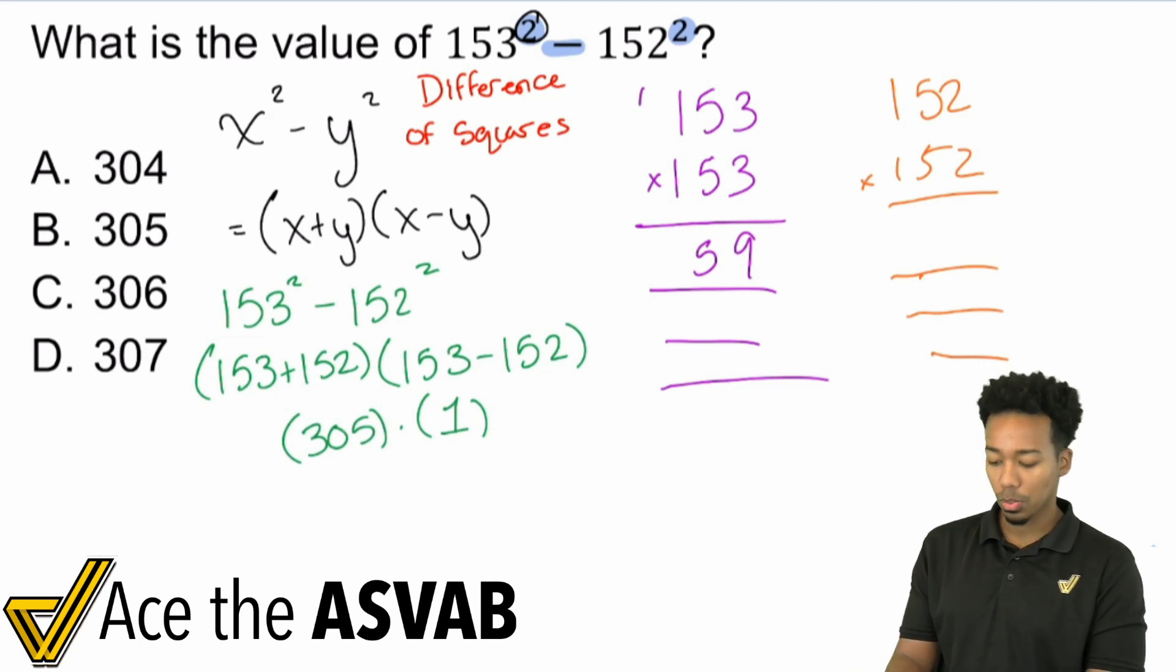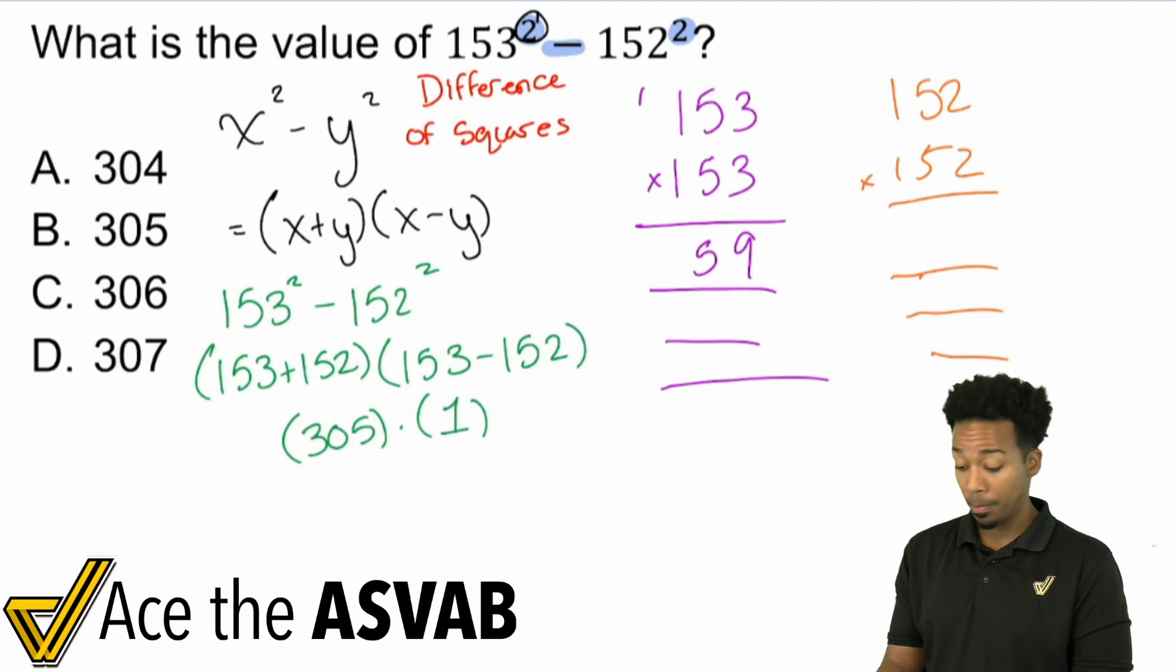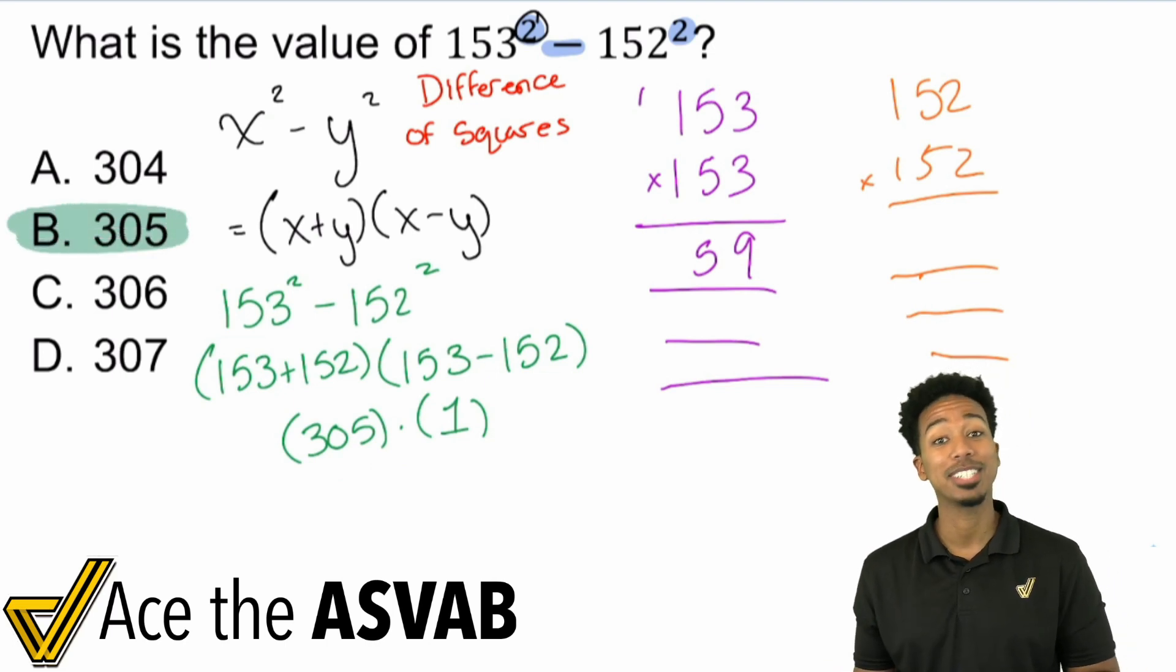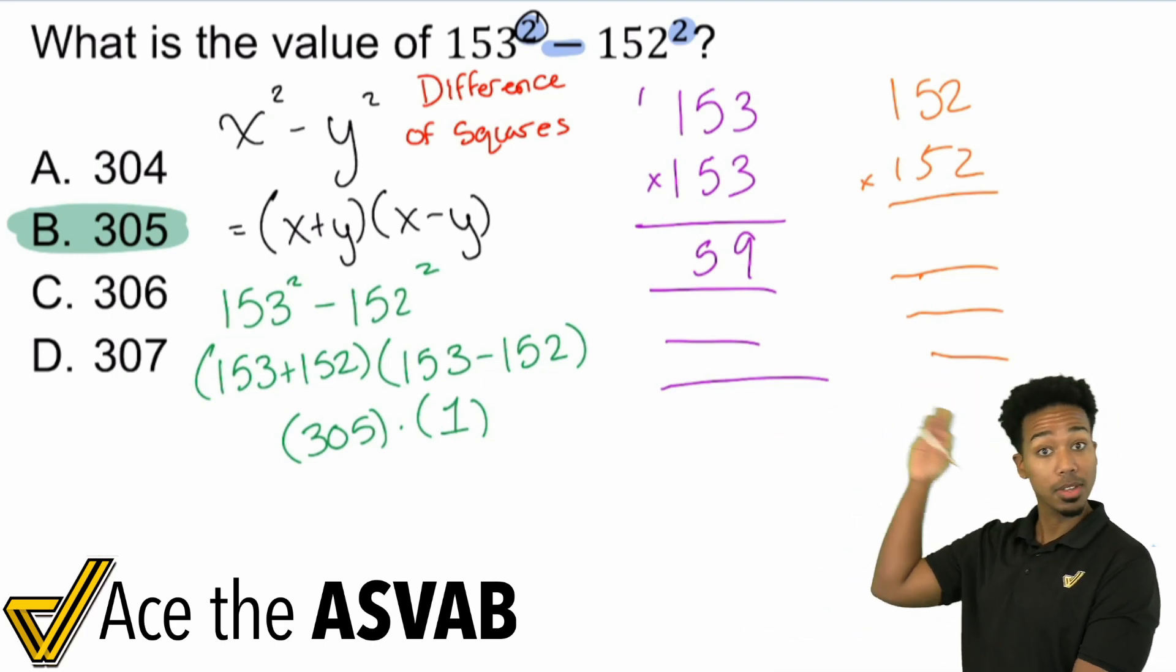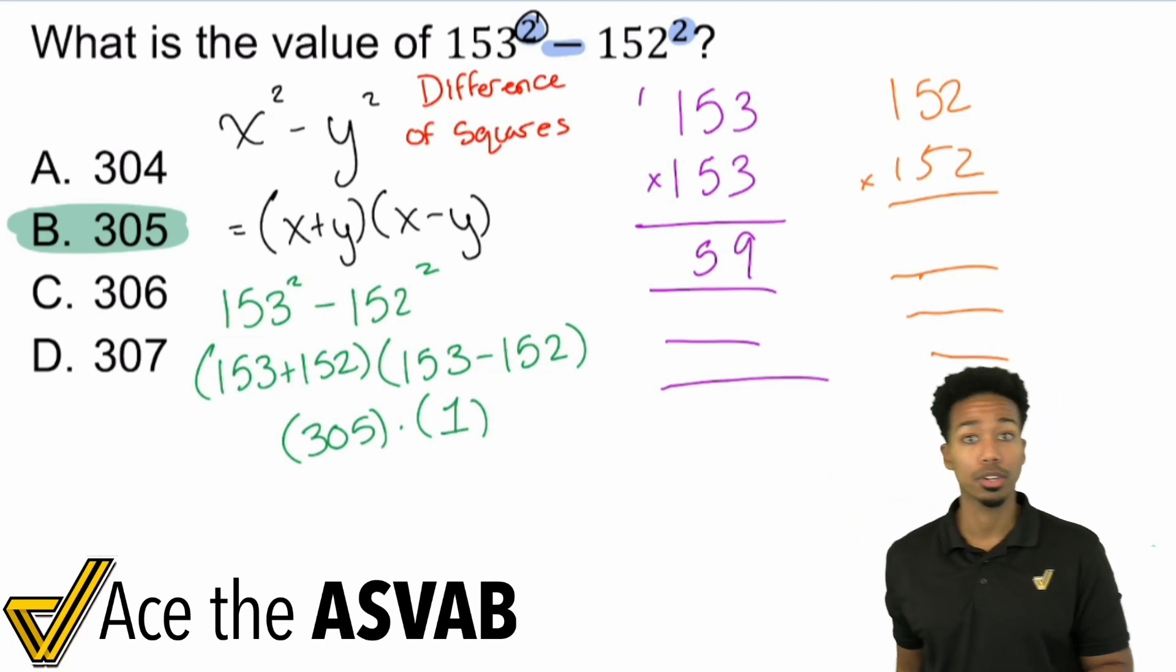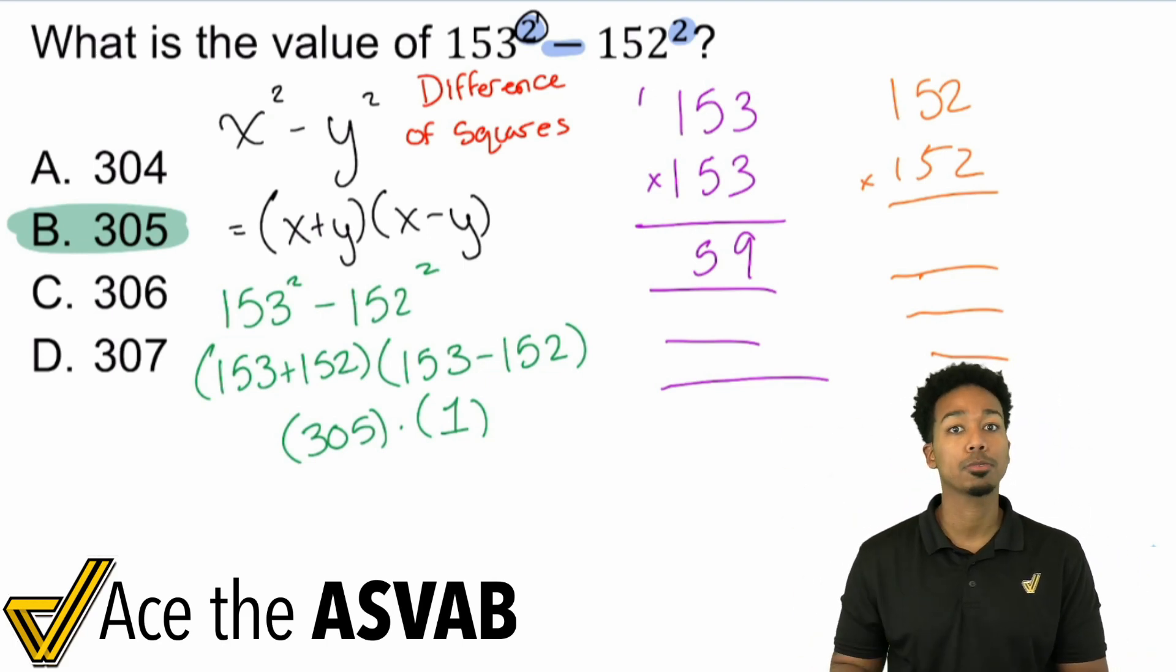So now what we did is we just turned this problem from multiplying three digit number by three digit number, then subtracting them. We turned all of this into 305 times one. Again, if you recognize that this is a difference of squares problem, you can give yourself a much, much easier time in getting this done. And that's the point of this, my party people. Again, the ASVAB is not just about getting the problem done because both of these methods work, right? Both of these work, but which one is going to get it done in as little time as possible, giving you time for those other remaining problems.